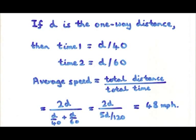And you've got to play around with these fractions. The bottom you can simplify, and by the time you've done all the simplification, the D cancels — because of course it's not really relevant — and it ends up with 48. So if you go along at 40 miles an hour and come back at 60, your average speed is not 50, it's 48 miles an hour.